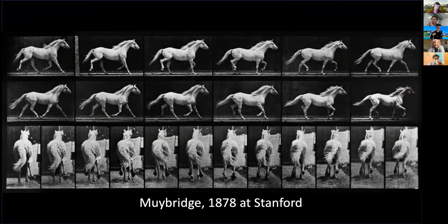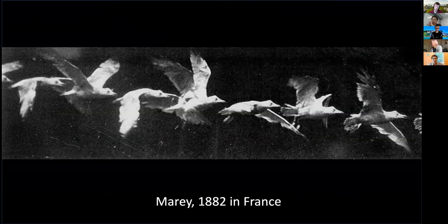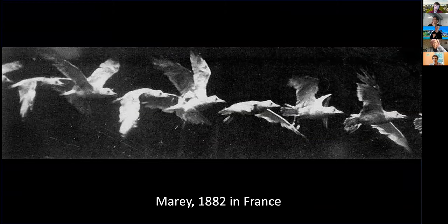The very first applications of photography were to the capture of animals. For example, the work of Muybridge at Stanford, and later in Pennsylvania, and Marais in France — they were ingenious in trying to understand animal behavior. The photograph, and what became the movie or film, was really an instrument for understanding animals and their behavior.